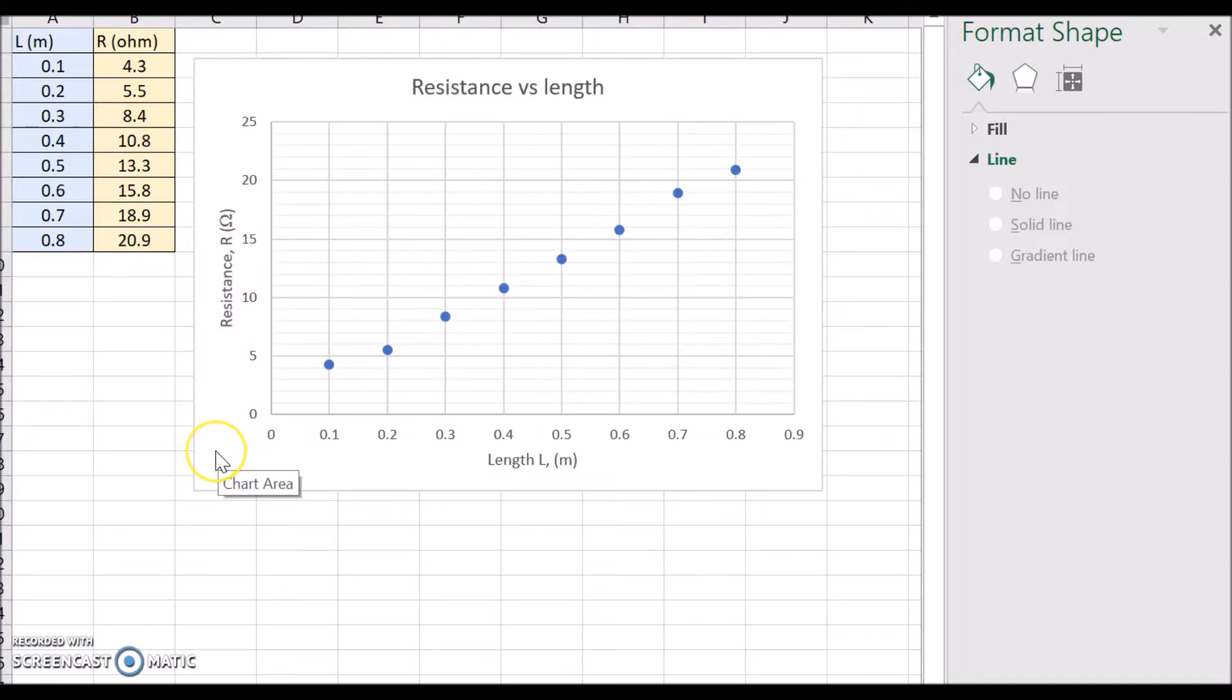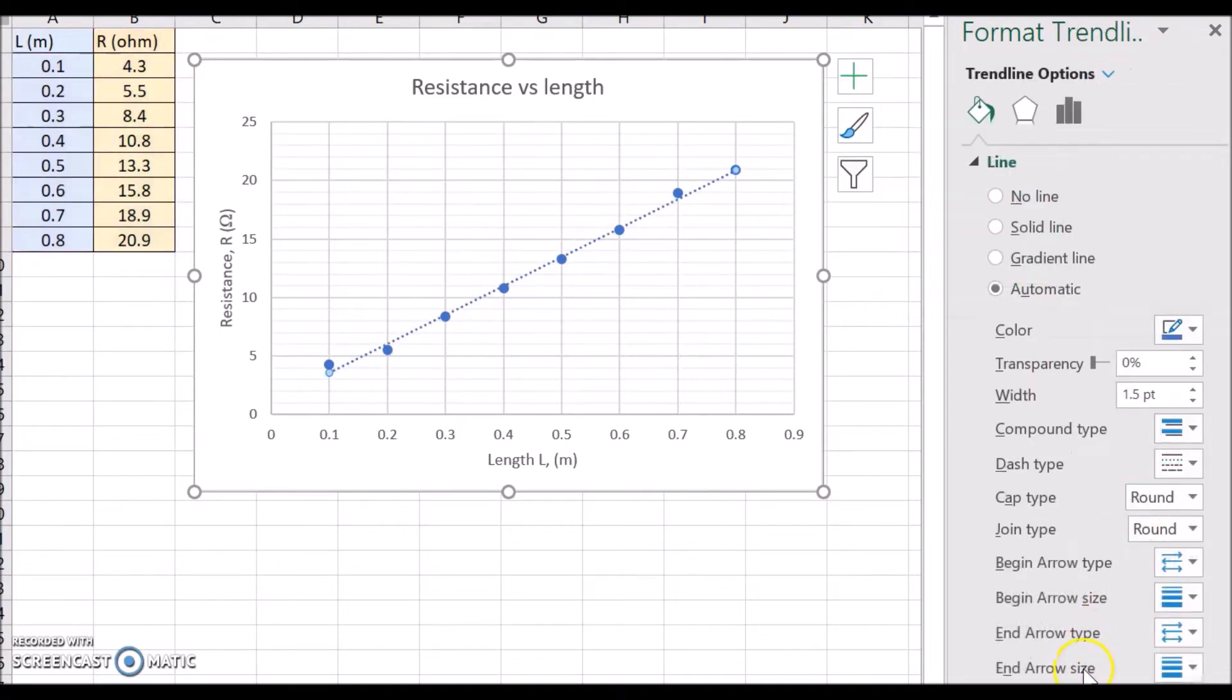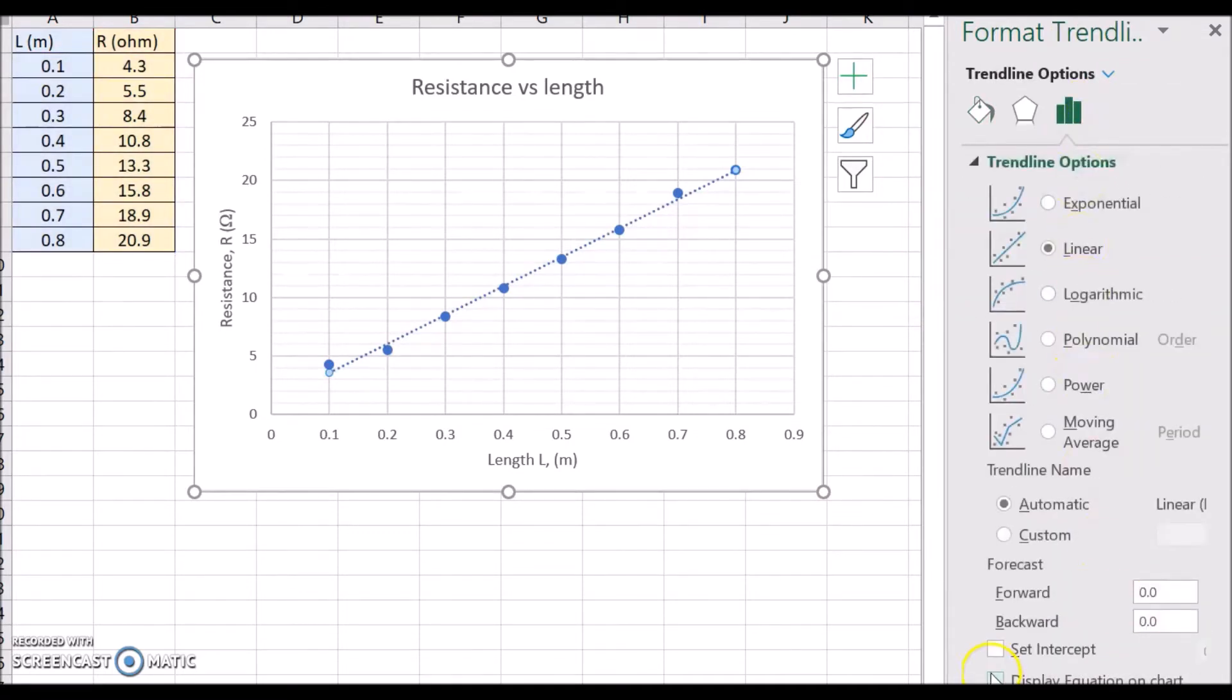You see it's fairly linear as you'd expect, resistance is proportional to length. But let's have a look at the trend line for this. I'll put a trend line in there, it's a linear trend line. Let's have a look at the formulas for it. Display equation, so there it is.